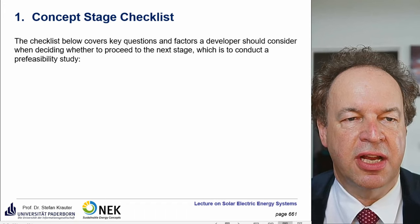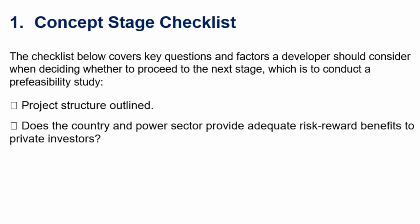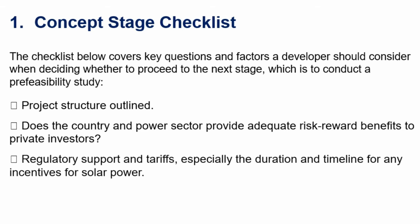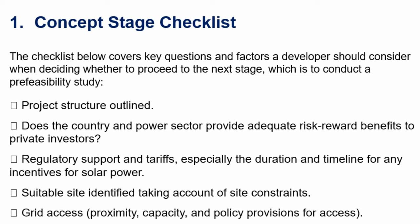Now the checklists — starting with the concept stage checklist for the pre-feasibility study. The project structure has to be outlined. Does the country and power sector provide adequate risk-reward benefits to private investors? How long is the support valid? Regularly check support and tariffs, especially the duration and timeline of any incentive for solar power. Suitable site, taking account of site constraints. Grid access — proximity, capacity, and policy provision for access.